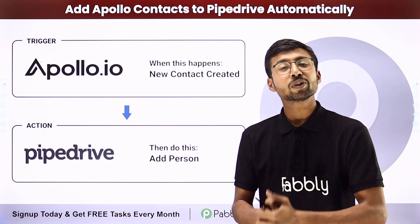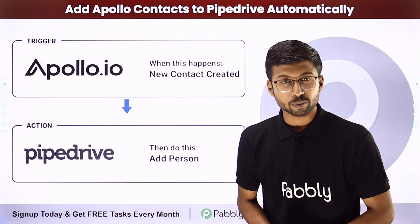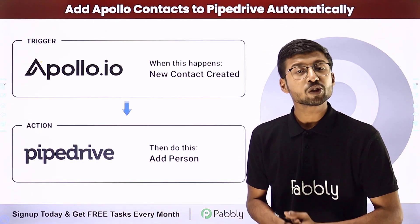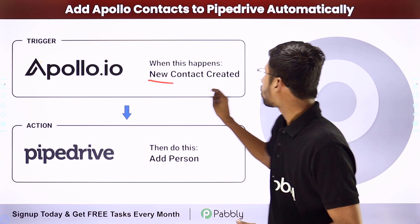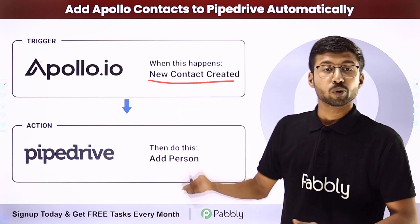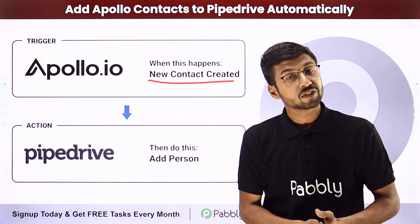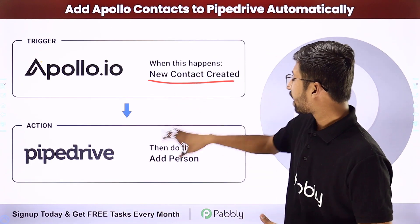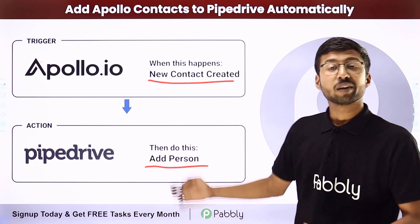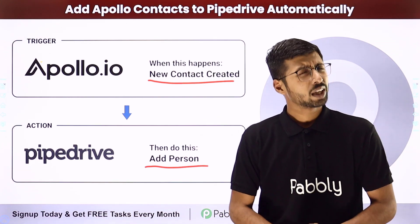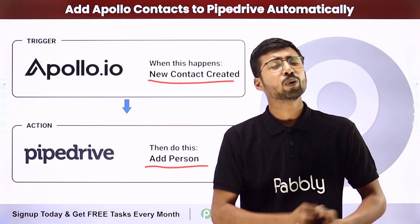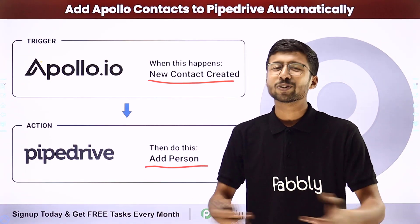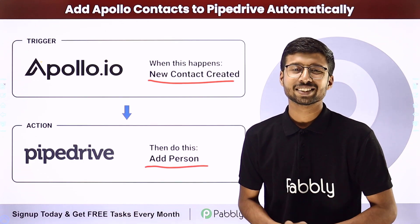You can completely automate this process. The trigger of this automation will be creating a new contact in Apollo, and the action will be adding that same contact as a new person in our Pipedrive CRM. To set up this automation, come with me to my screen.